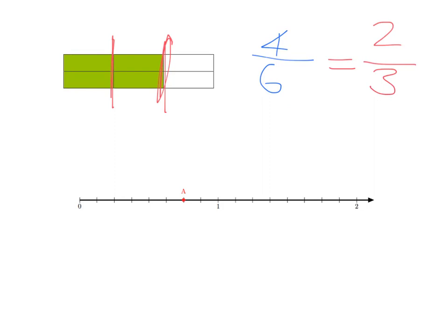Let's do another quick example on our number line. What is A? We've divided our unit into eight pieces, so we're talking about eighths. We've taken six out of eight pieces, so A is at six-eighths. But if we look at it differently, we can think of four pieces — quarters. And where is A? It's three along, so it's at three-quarters. Six-eighths and three-quarters are exactly the same fraction, exactly the same number, just written in a different way. We call these equivalent fractions.